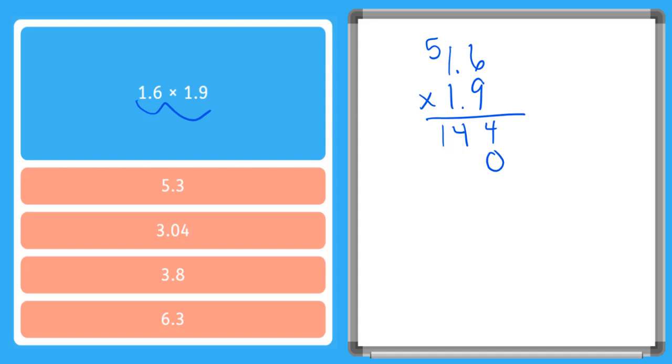I'm going to say 1 times 6. That's 6. And 1 times 1. That's a 1. Then I add my products together. 4 plus 0 is 4. 6 plus 4 is 10. I carry my 1. 1, 2, and 3. So now I have my whole number as if I was multiplying two whole numbers.